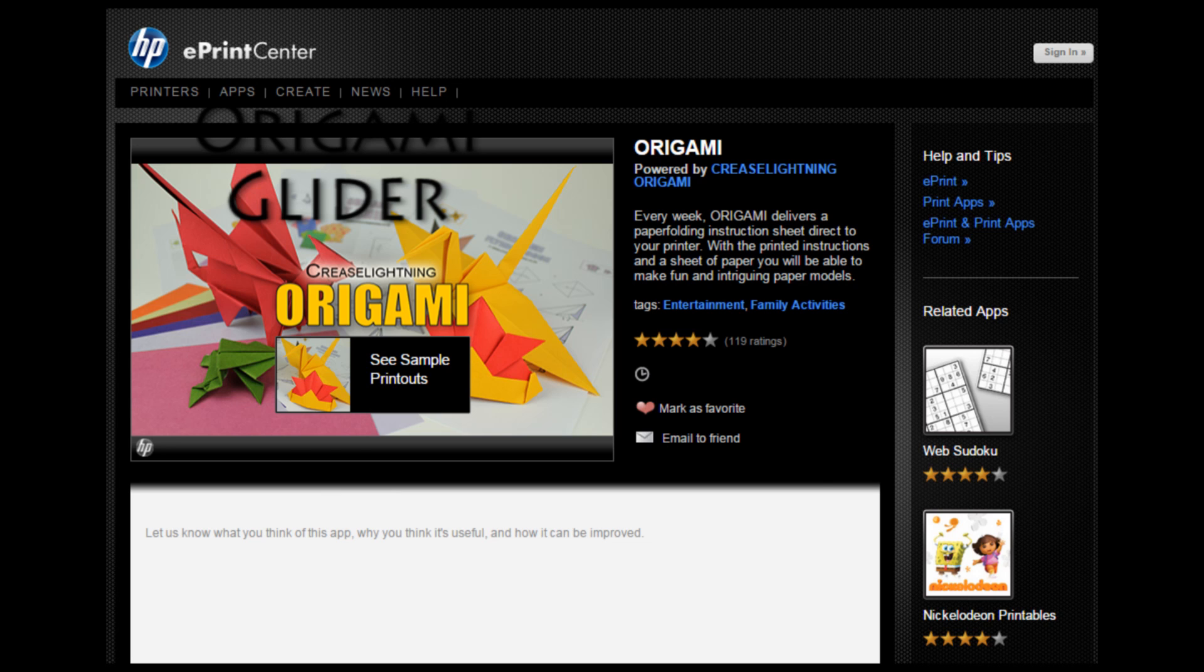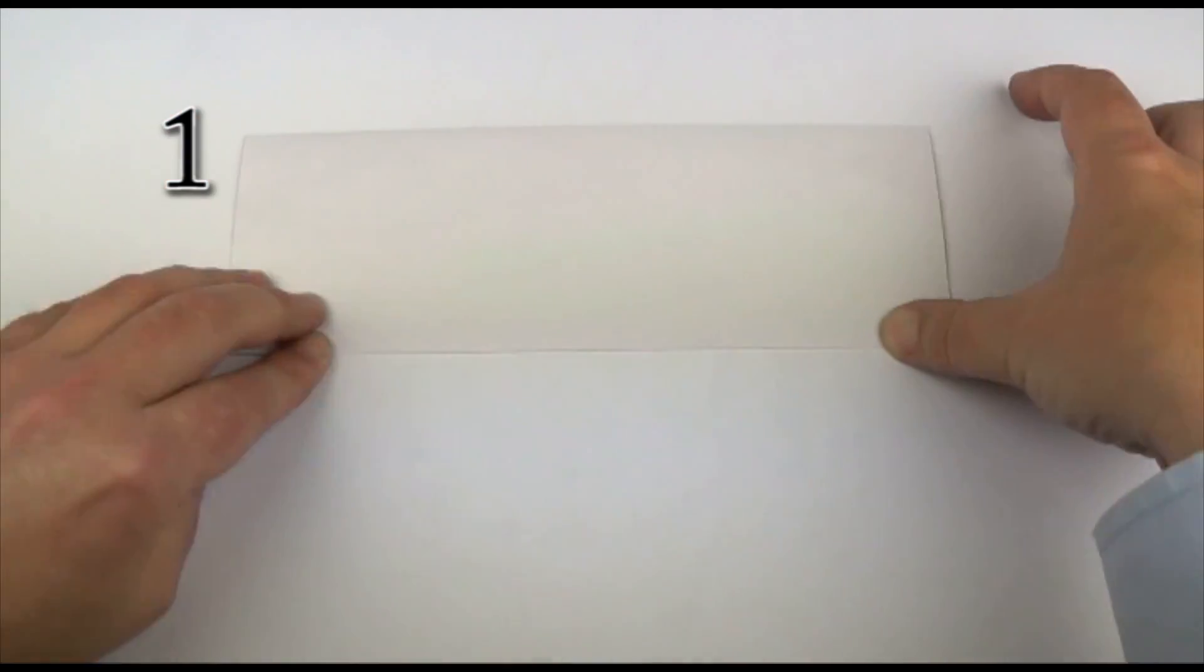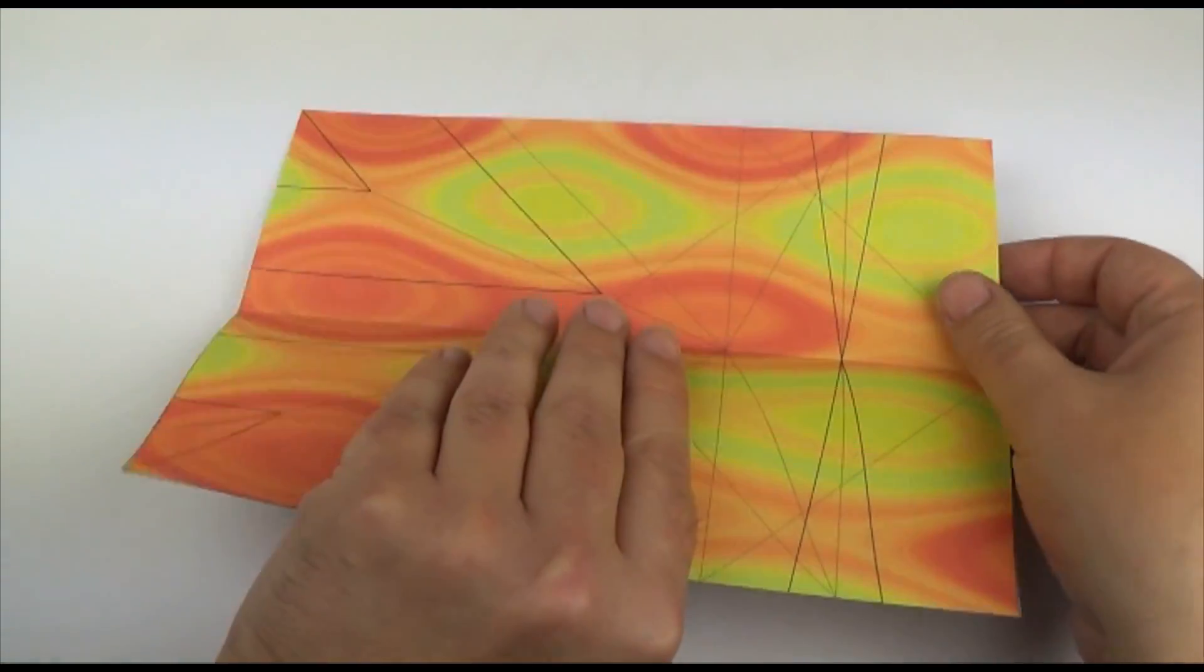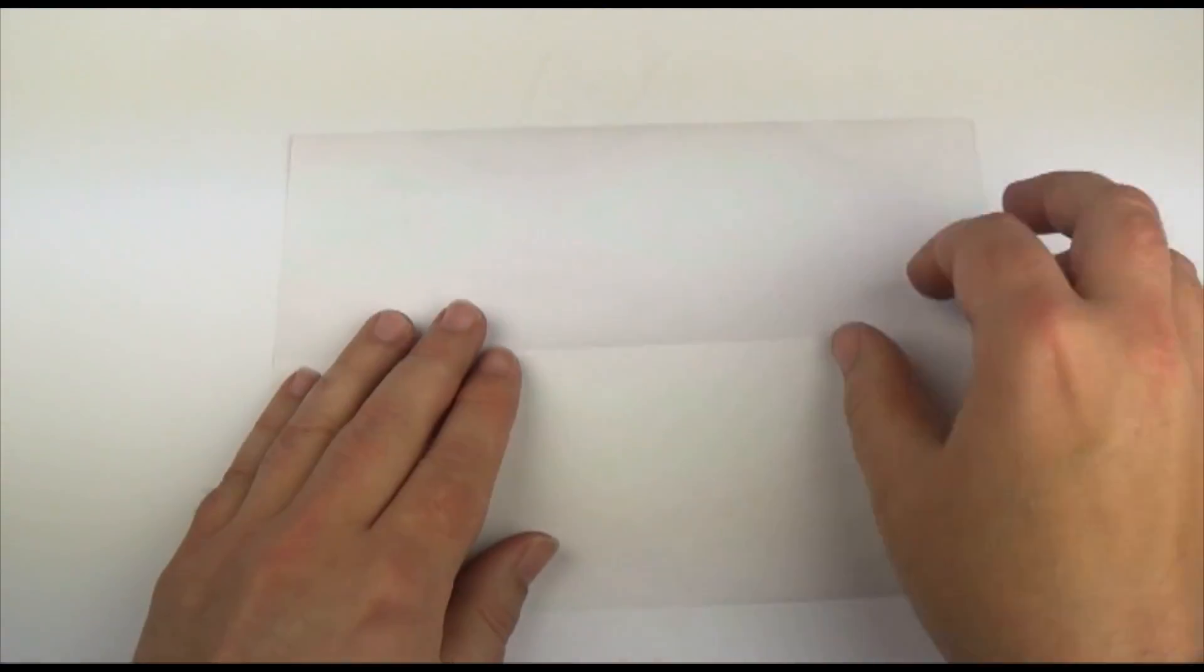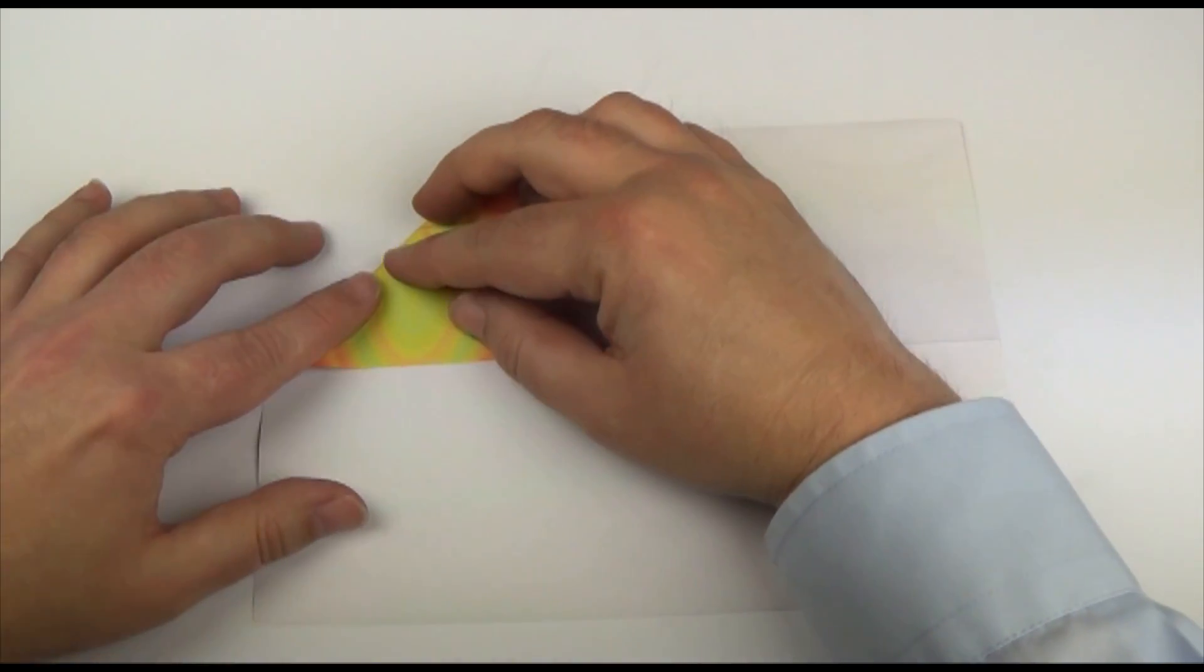Here are instructions to make an origami glider. We'll start with a rectangle and fold it in half lengthwise, then turn over and fold one of the corners down to the folded crease.